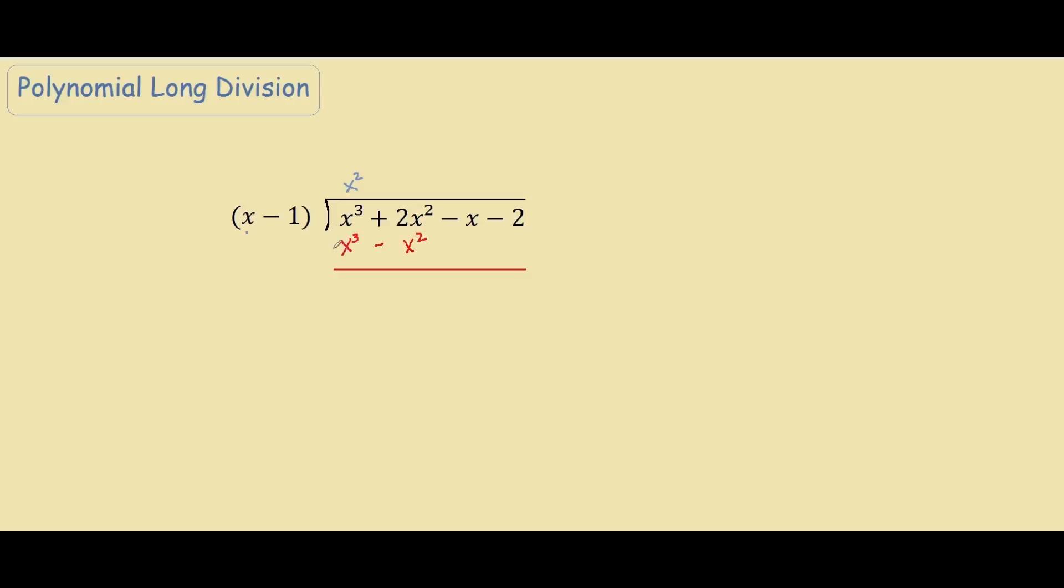Our next step is to take the second line over here and subtract it away from our first line. So this x cubed will cancel out, we have 0 and 2x squared minus another minus x squared is actually plus 3x squared. And we bring everything down here, so negative x, negative 2.